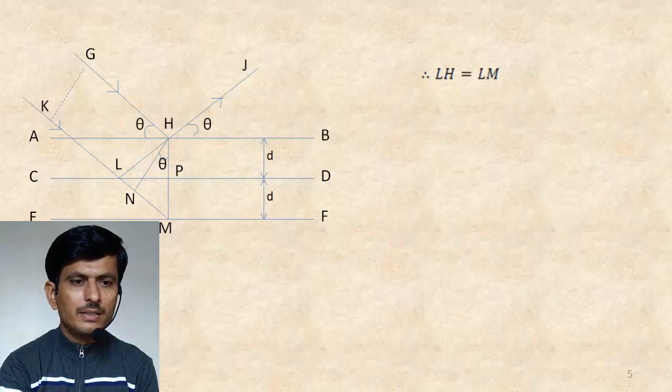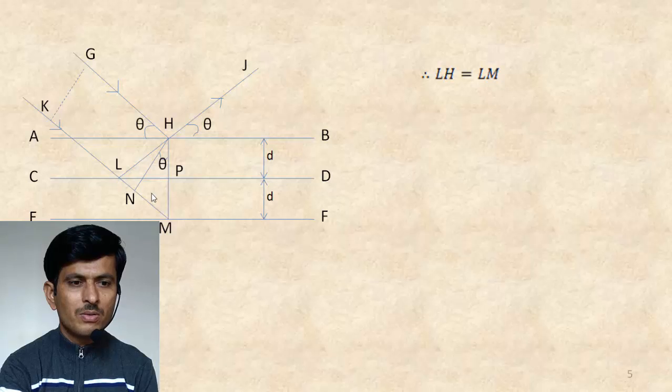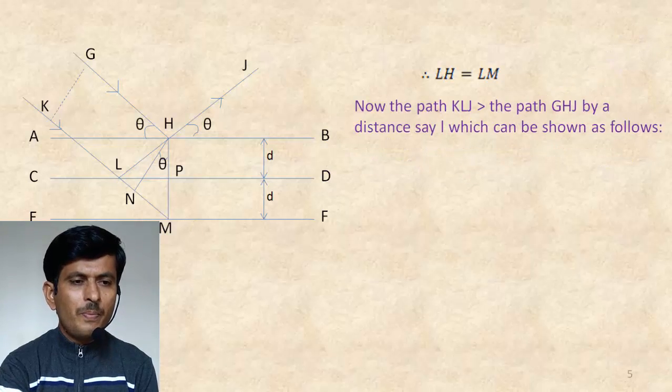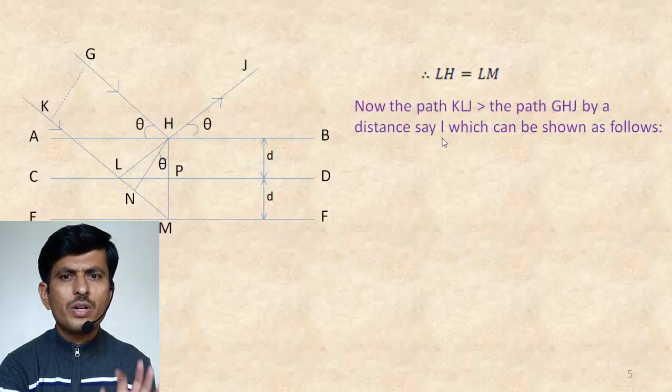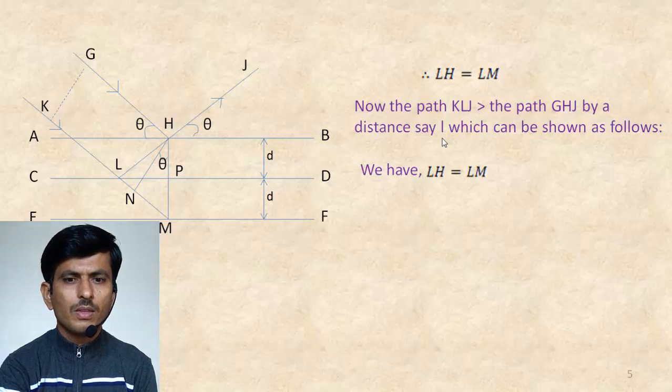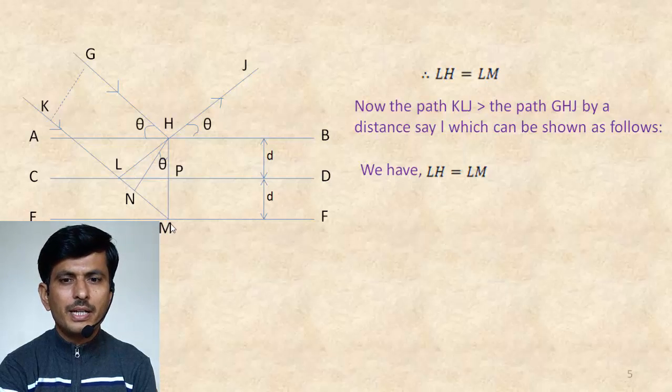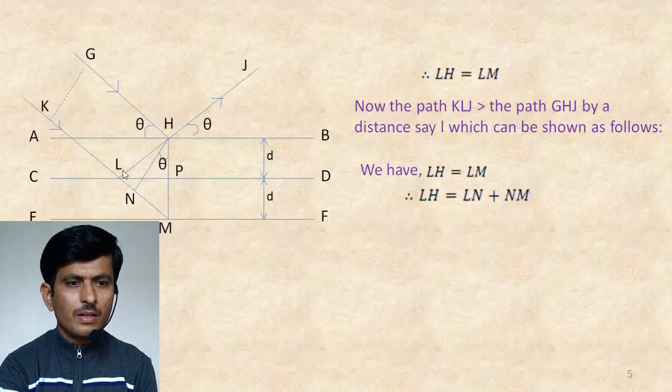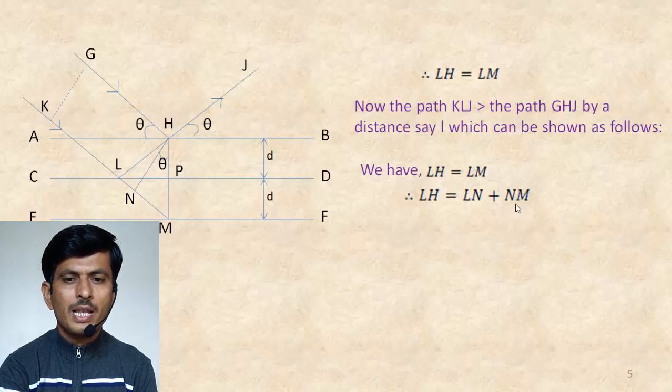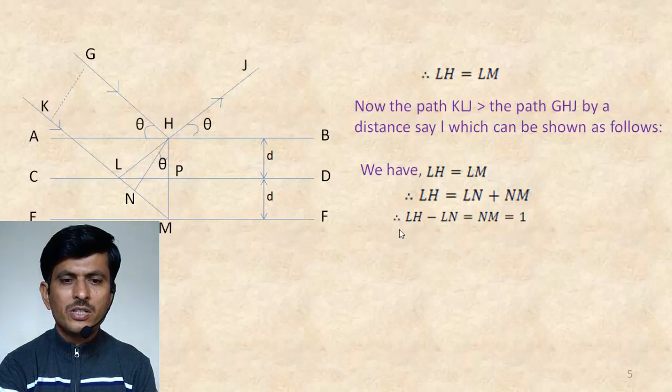Therefore, we can write the length LH is equal to LM. Now, the path KLJ greater than the path GHJ, suppose by the distance L, which can be shown as follows. We have LH is equal to LM. But this LM is equal to LN plus NM. Therefore, we can write LH is equal to LN plus NM. Therefore, rearranging this equation, we can write LH minus LN is equal to NM which is equal to L.